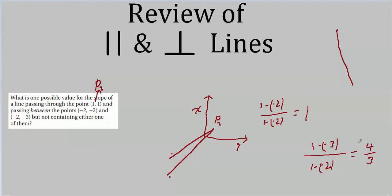So the slope m we're looking for is between 1 and 4/3. We can't use ≥ or ≤ because a slope of exactly 1 would pass through (−2,−2) and a slope of exactly 4/3 would pass through (−2,−3), and those endpoints are excluded. So we need 1 < m < 4/3.